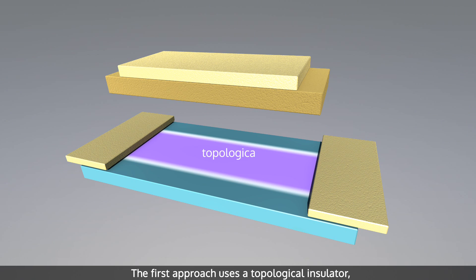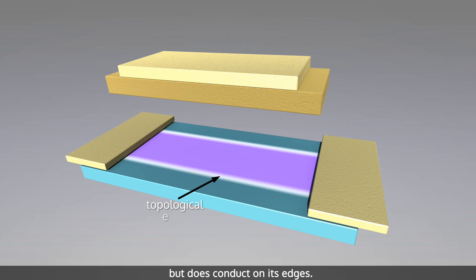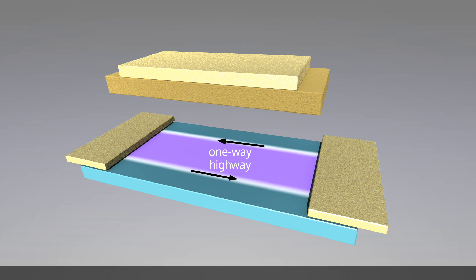The first approach uses a topological insulator, a material which does not conduct electricity in its interior, but does conduct on its edges. These edges are one-way highways for electrons, which can travel on them without resistance.